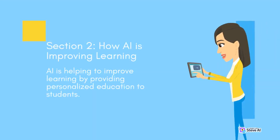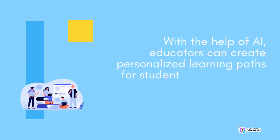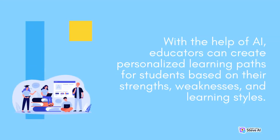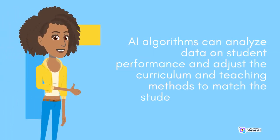Section 2: How AI is Improving Learning. AI is helping to improve learning by providing personalized education to students. With the help of AI, educators can create personalized learning paths for students based on their strengths, weaknesses, and learning styles. AI algorithms can analyze data on student performance and adjust the curriculum and teaching methods to match the student's unique needs.